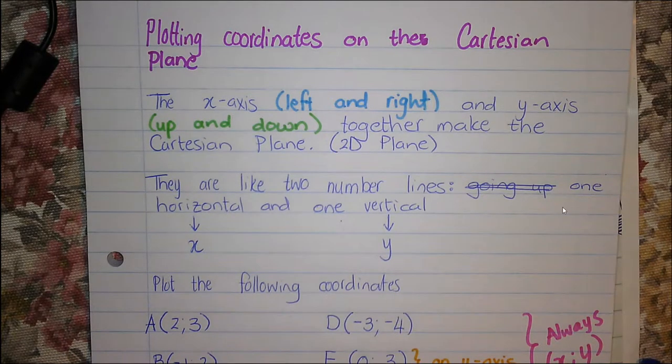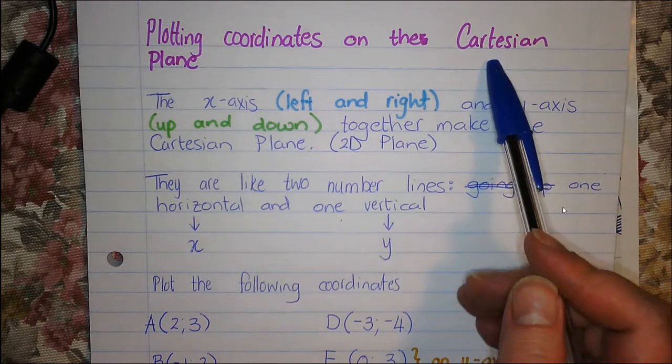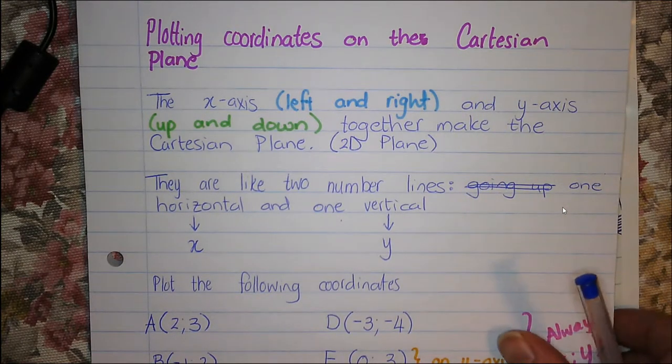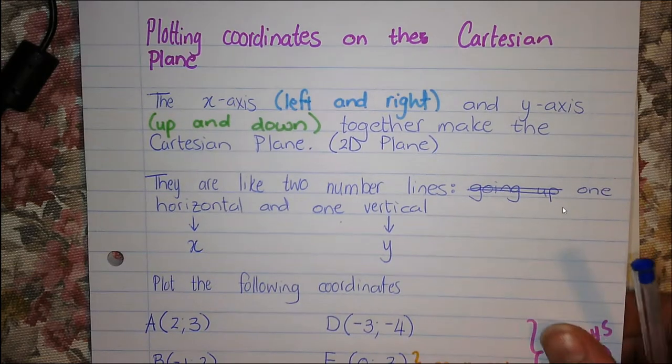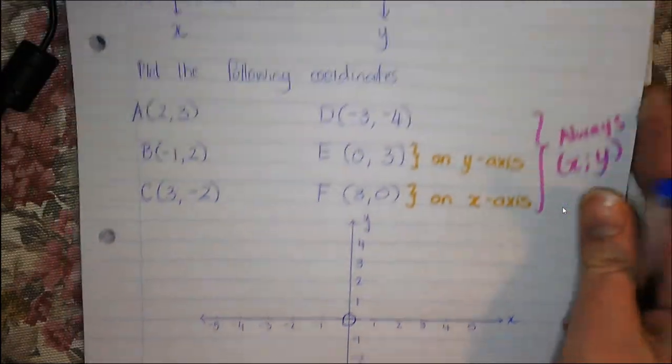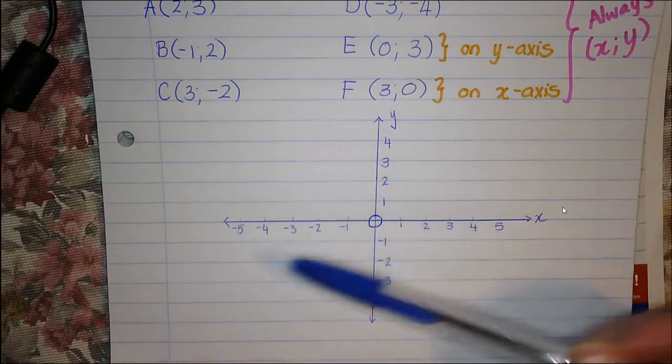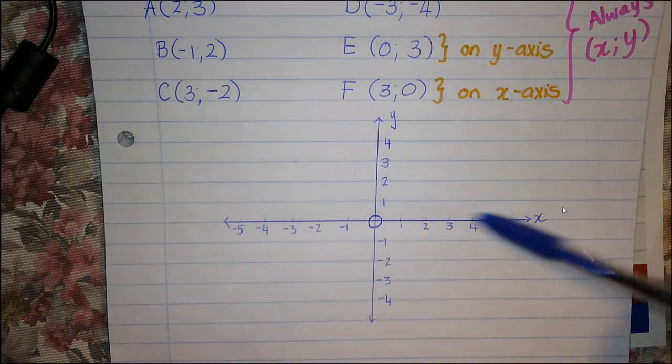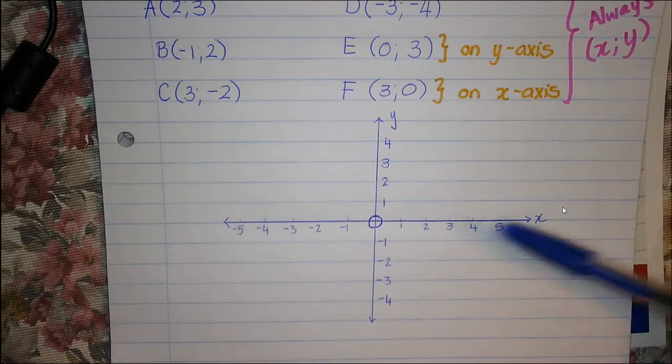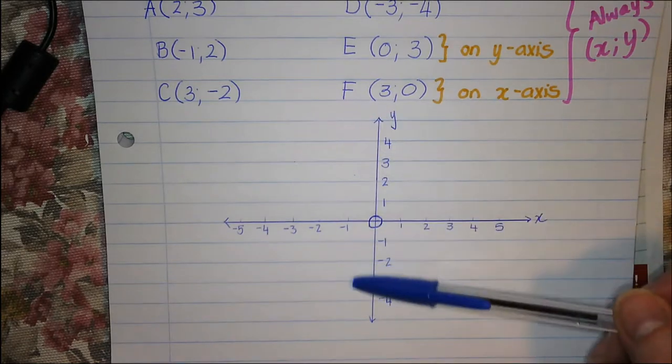Today we're going to be talking about plotting coordinates on the Cartesian plane. The Cartesian plane looks like this. It goes horizontal, and this is the x-axis, and it goes vertical, this is the y-axis.